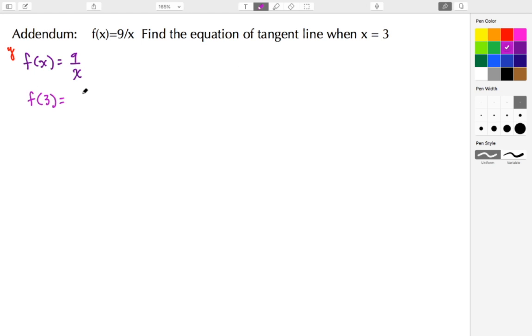So here f of 3 is equal to 9 divided by 3, and 9 divided by 3 is 3. So we find that our point of tangency is at the point 3, 3.